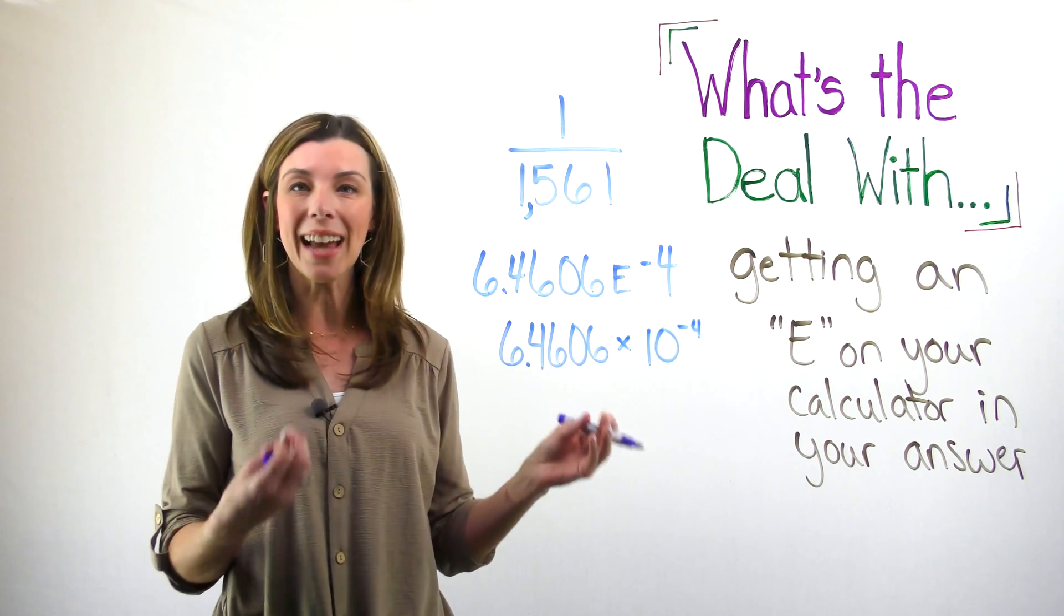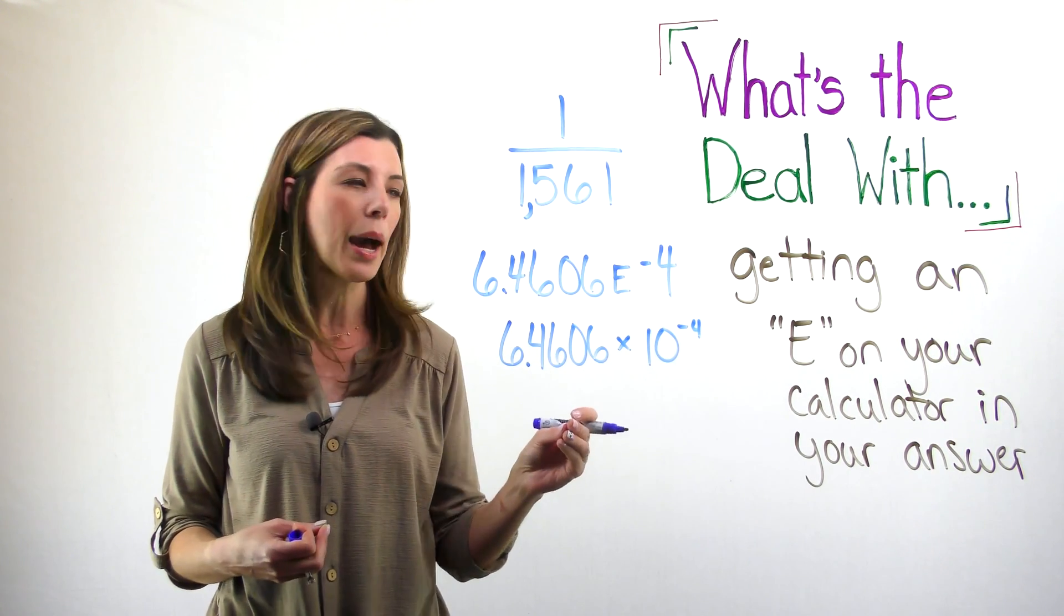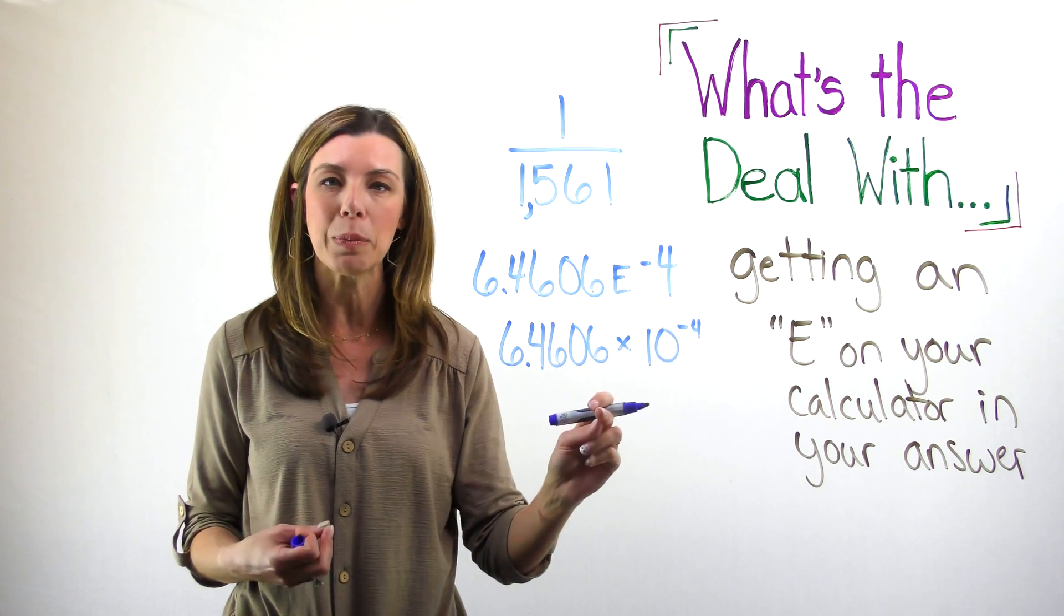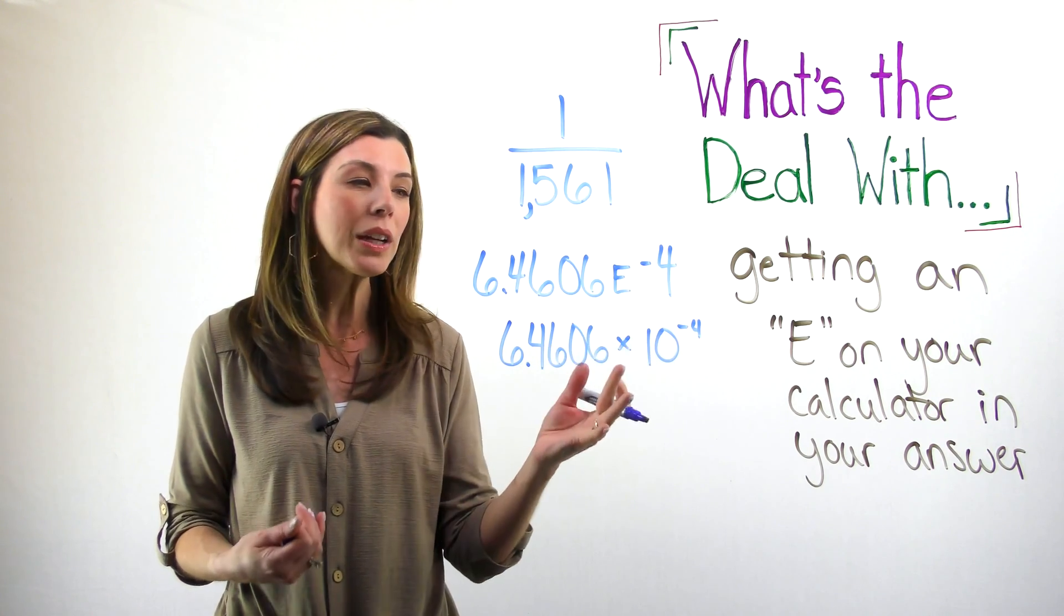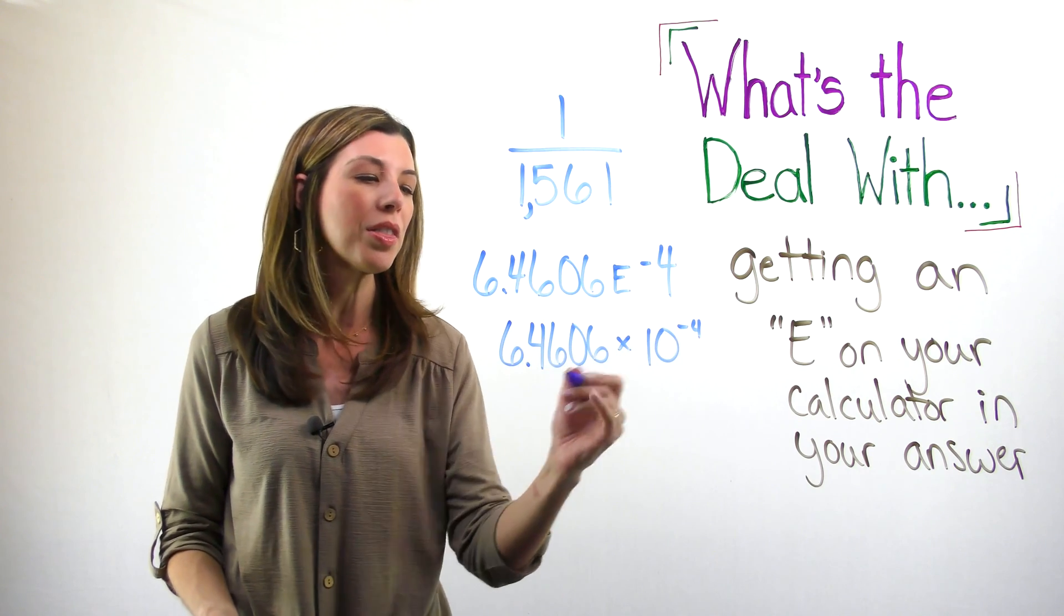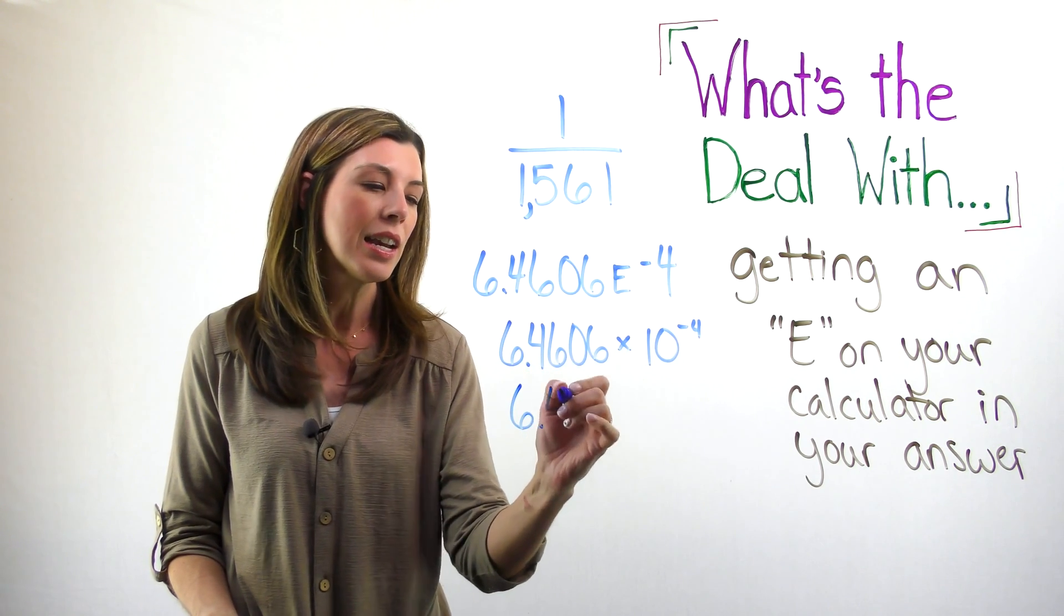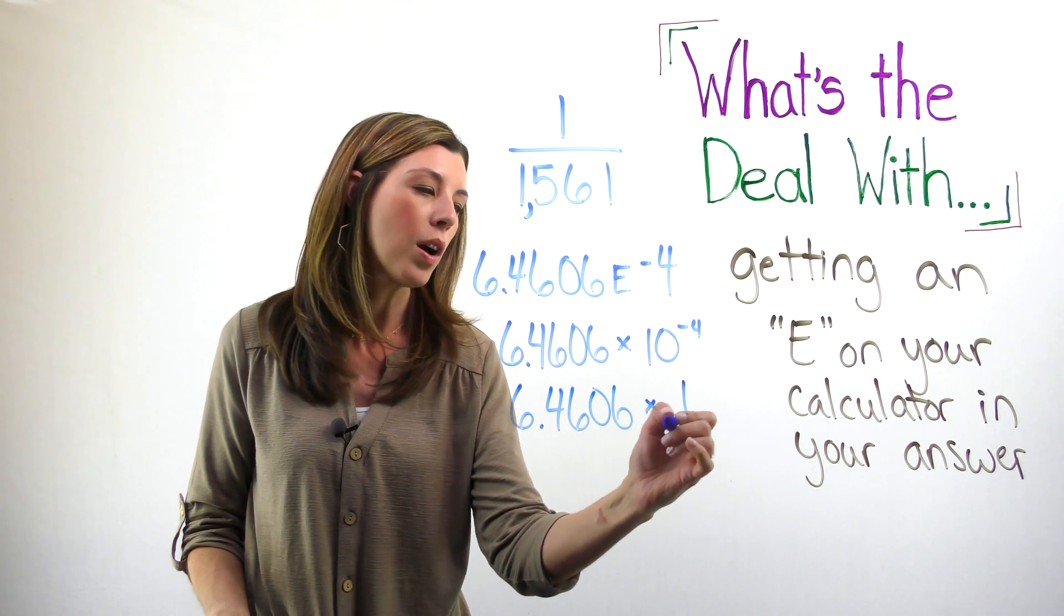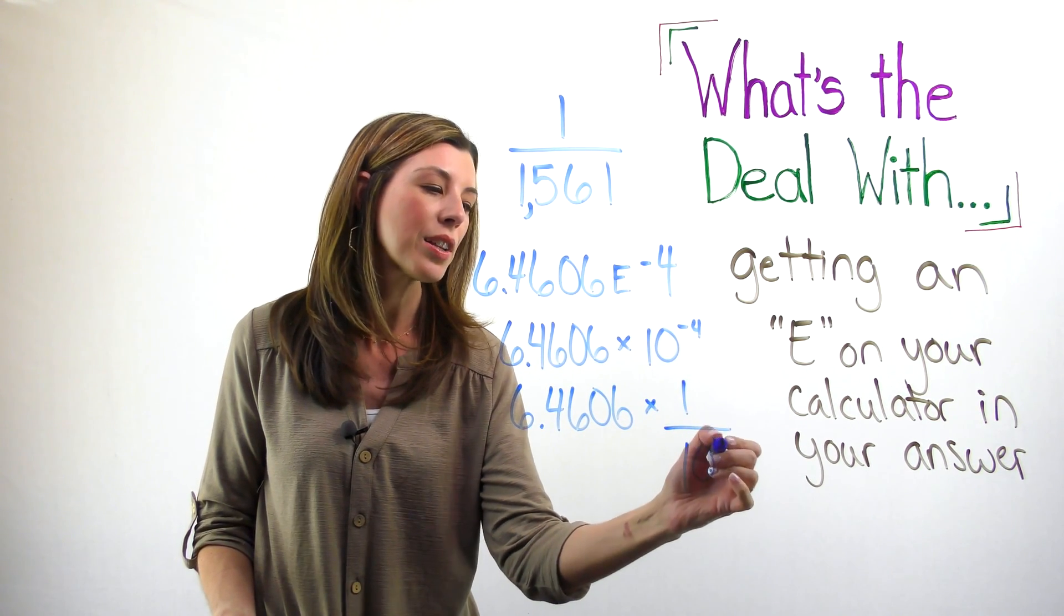Now you could put that into your calculator and you'll see what's going to happen. Because we're multiplying by a negative exponent, it's the same as dividing, and really think back to your algebra.